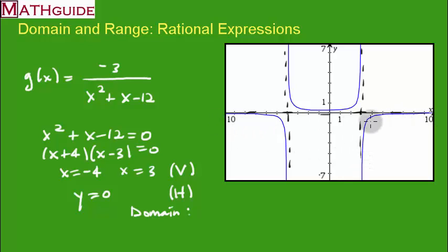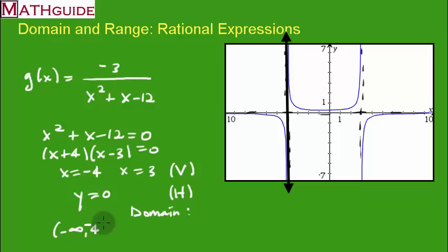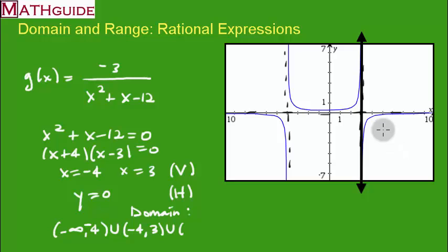Taking the domain from left to right: the left branch goes from negative infinity approaching negative 4, never equaling it. The middle branch goes from negative 4 all the way to 3, never equaling those values. The rightmost branch goes from 3 to positive infinity. We combine all three with union signs to write the complete domain.